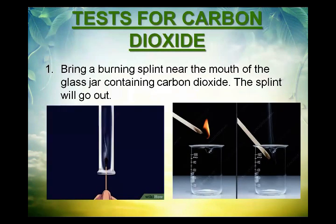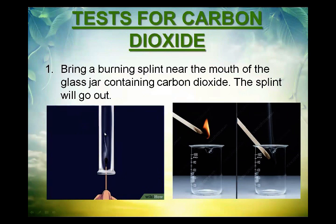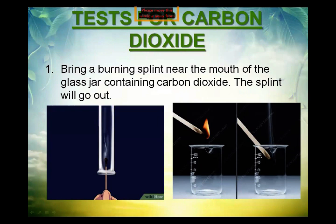To test that the collected gas is carbon dioxide, bring a burning splint near the mouth of the glass jar containing carbon dioxide. The burning splint will go out. This proves that the gas in the jar is carbon dioxide, because we know that carbon dioxide does not support burning.